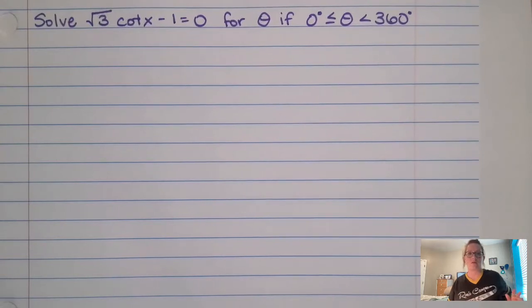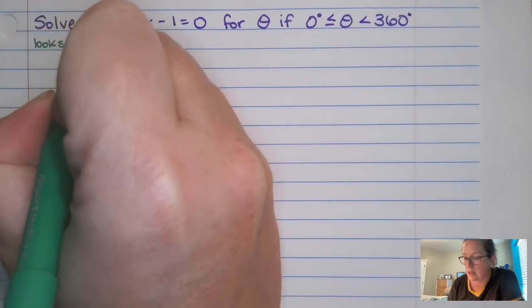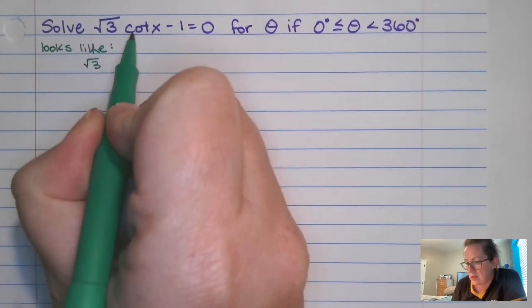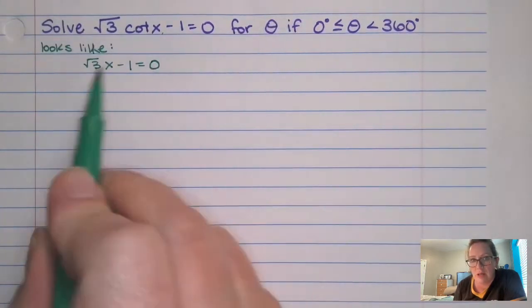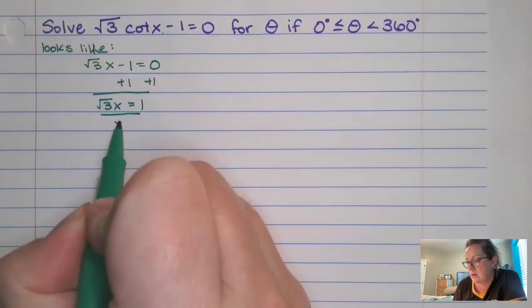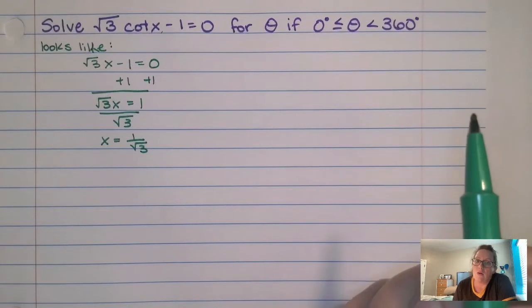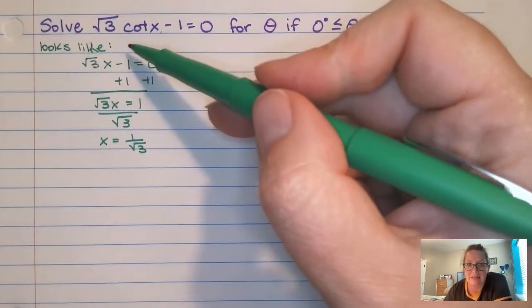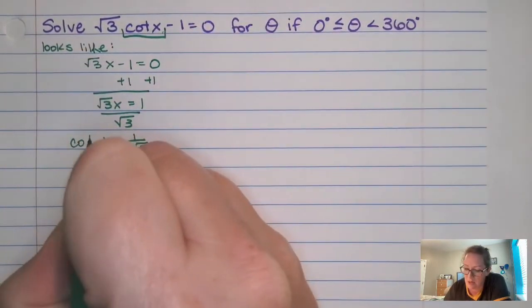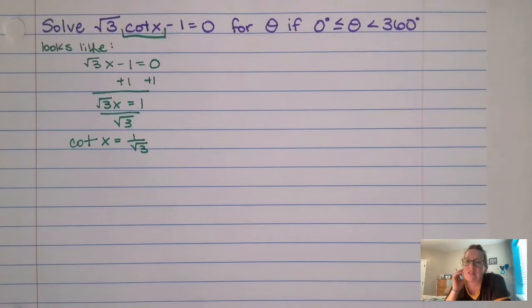Okay, so same type of a thing. Let's make it look like something we aren't so scared of. Looks like root 3x minus 1 equals 0. If we had something like that, what would we do? We would add 1, square root of 3x equals 1, x equals 1 over root 3. All right, so let's think about this. We could take this and just throw cotan in front of it and you're done.